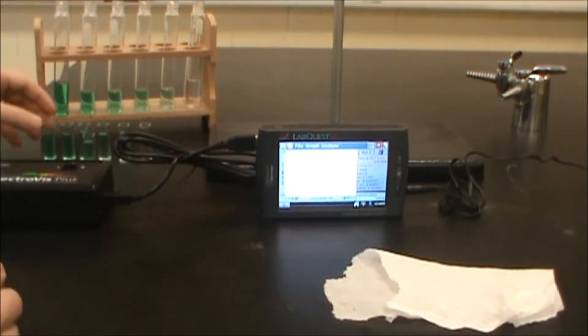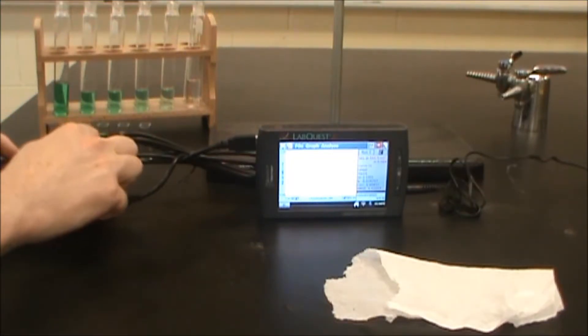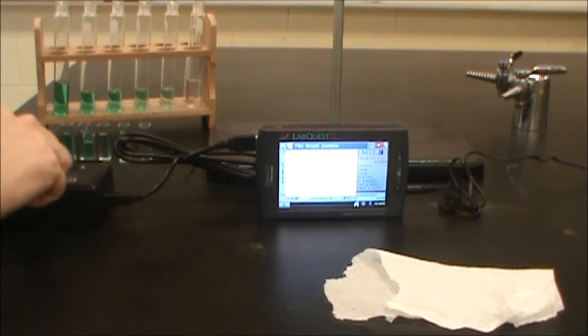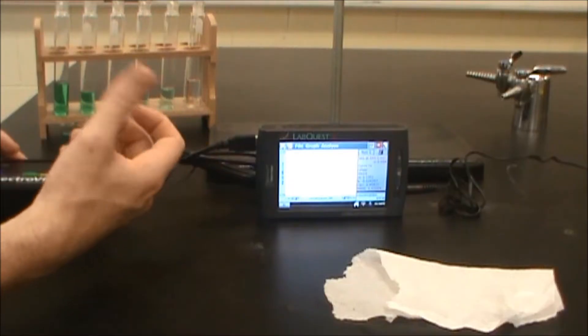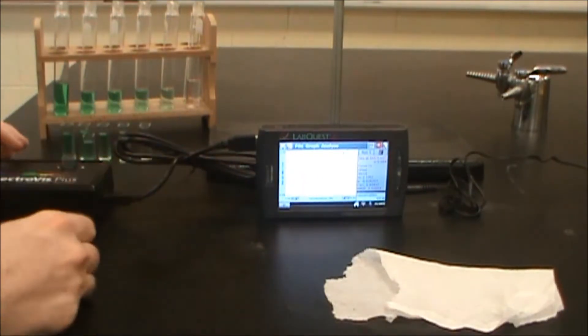And what I'm going to do is I'm going to put them into the SpectraVis Plus, which shines a light from this side to a detector over here. And the light that makes it through gets detected, and that amount of current will tell you how much light is being absorbed and how much is being transmitted, which then can be displayed on this screen here.